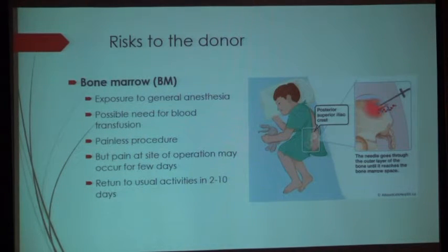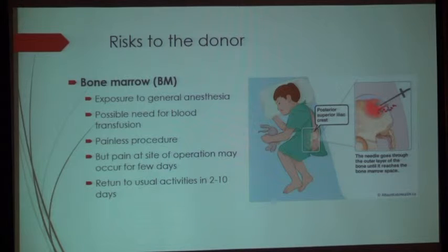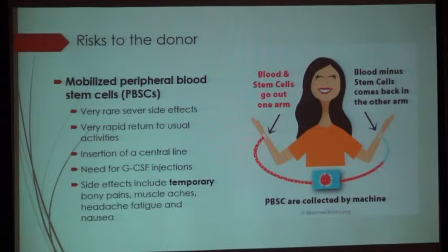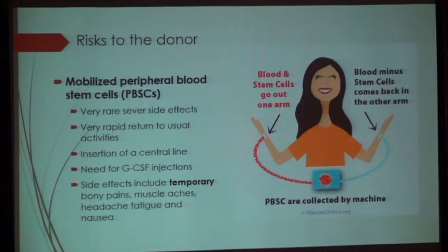What are the risks for the donor? If a child donates bone marrow, they will be exposed to general anesthesia with its complications, a possible need for blood transfusion, and pain at the operative site for a few days to two weeks. Return to usual activities takes about two to ten days. For mobilized peripheral blood stem cell donation, there is a very rare incidence of severe side effects and rapid return to activities, but it may require insertion of a central line and granulocyte colony-stimulating factor injections for many days, with side effects including temporary bone pain, muscle aches, headache, fatigue, and nausea.